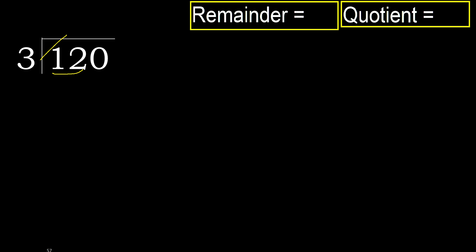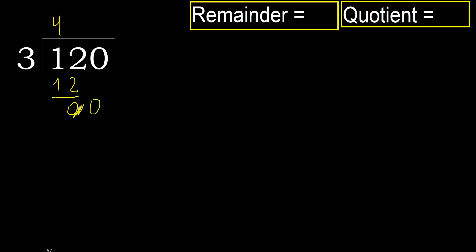3 multiplied by 5 is 15 — 15 is greater. 3 multiplied by 4 is 12 — 12 is not greater. Subtract: 0. Next, eliminate 0 on this side.